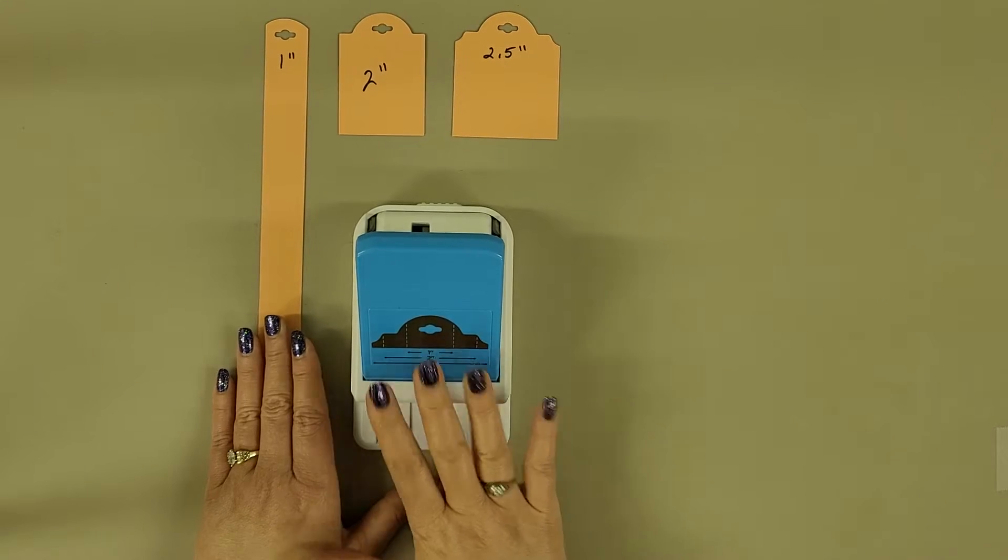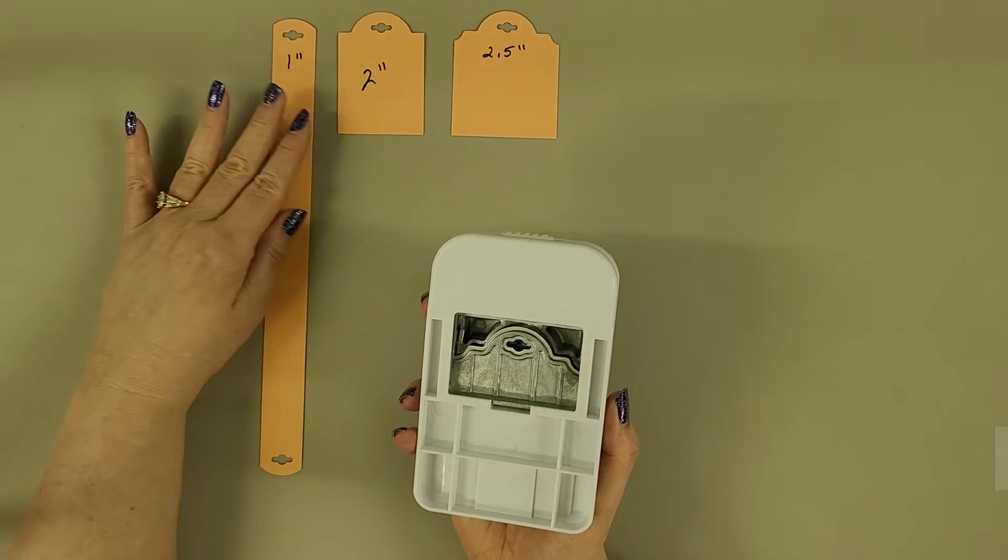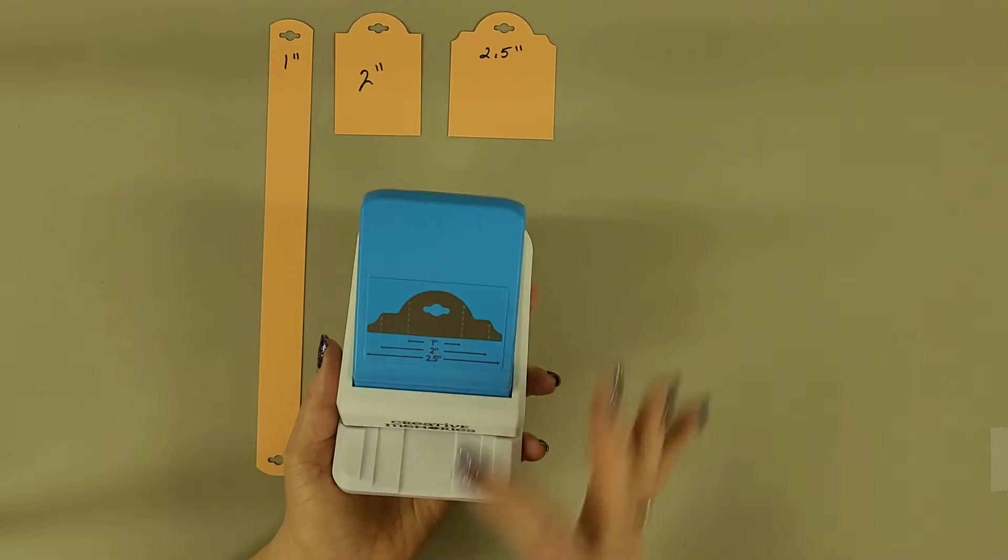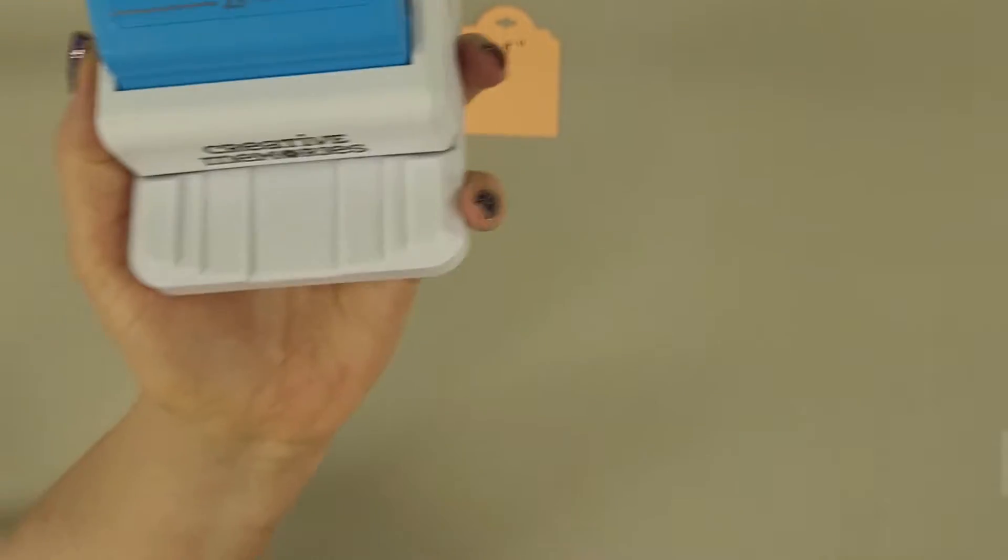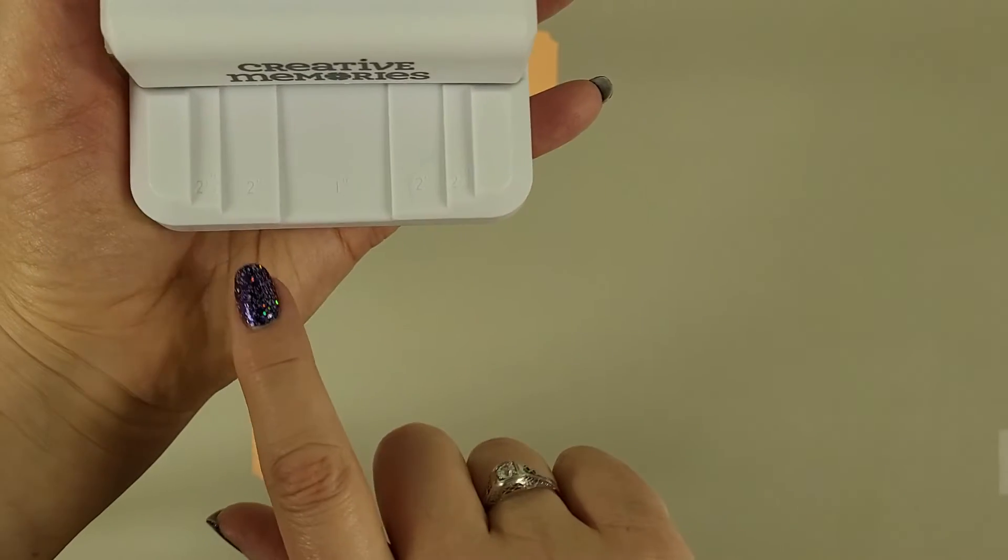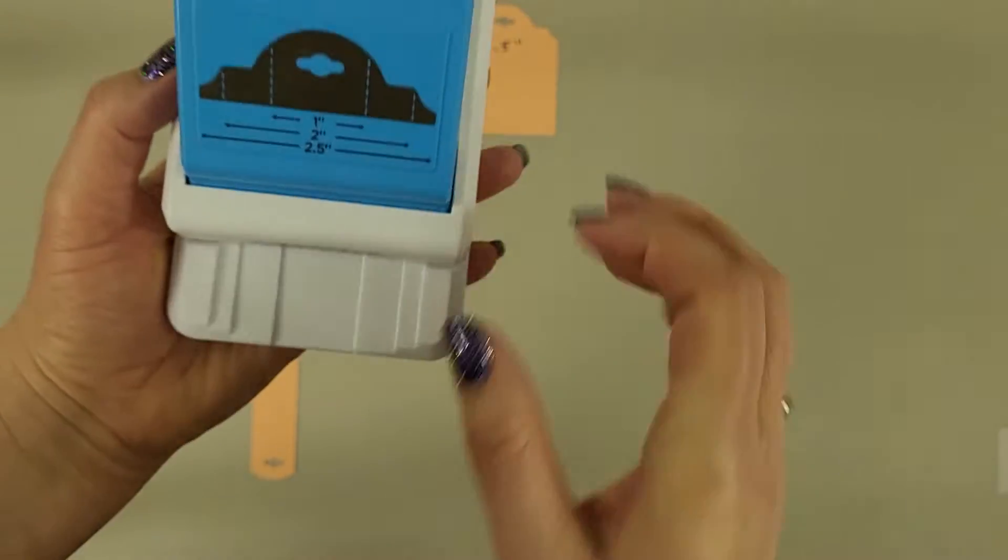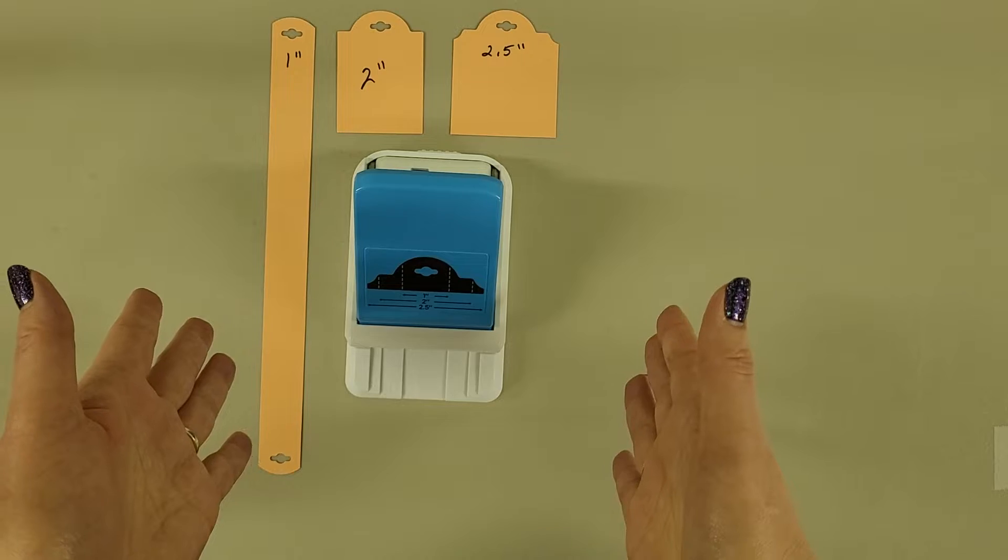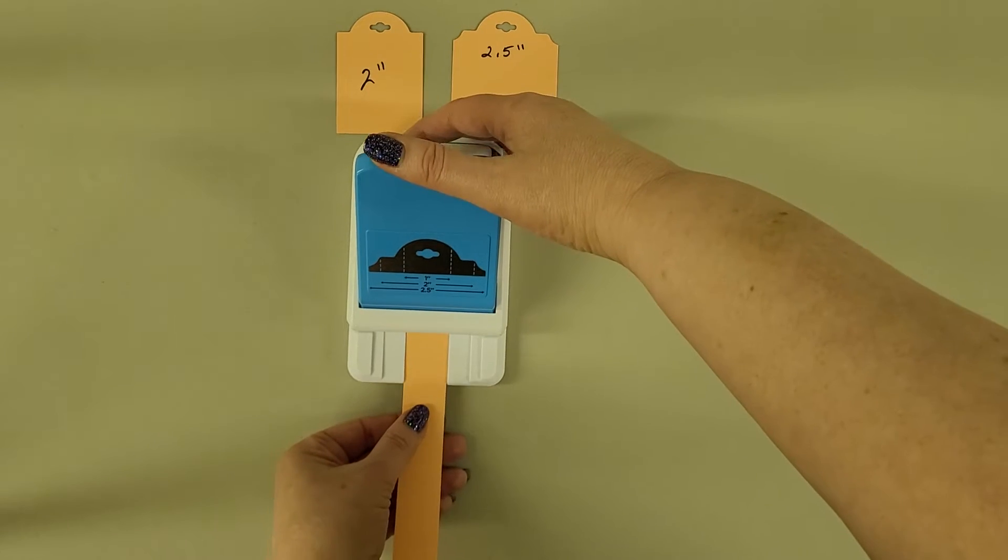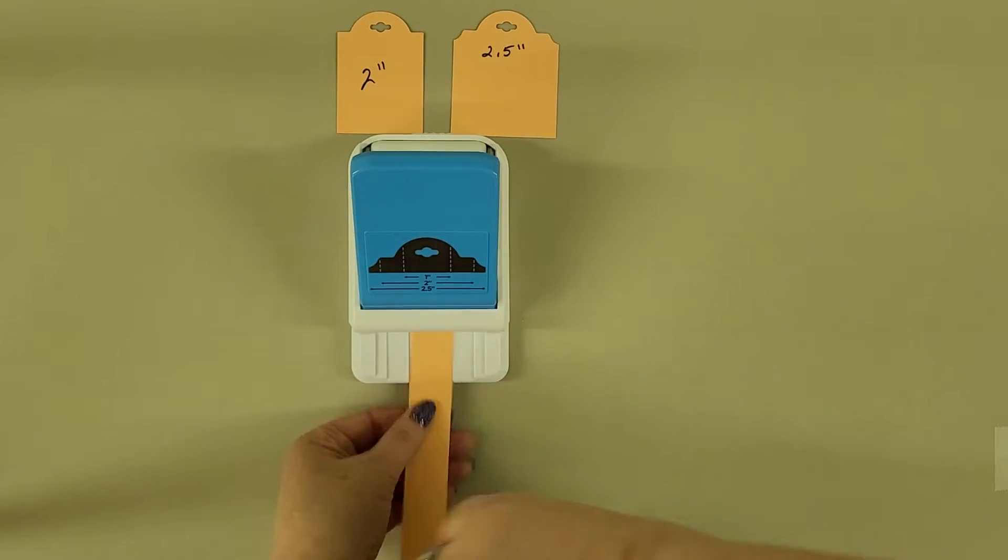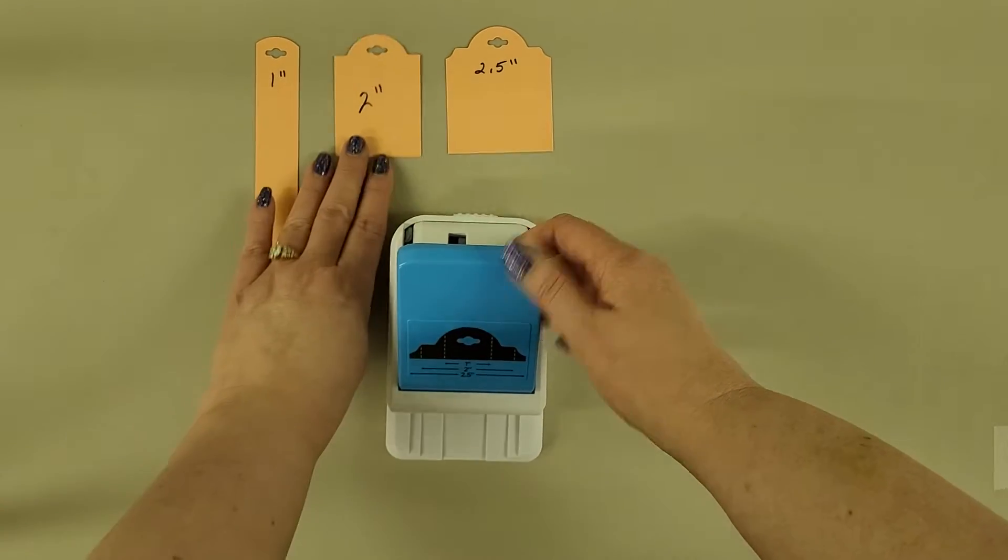So a couple things that are unique about this one compared to the old one is it does make that hole at the top, which is very helpful. But the thing that is really cool is you can make three widths. So it makes one inch, two inch, and two and a half inch. And if you look closely, here's your one inch width, here's your two, here's your two and a half. So it depends on how wide you cut your paper. You cut your paper, you push it all the way to the back, and it's not going to go any further than the back. You punch it, boom, you've got it.